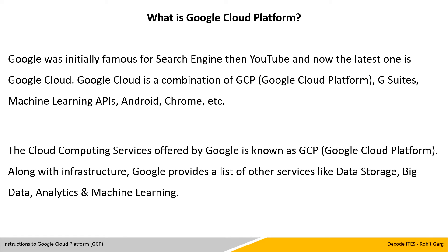What is Google Cloud Platform or GCP? Google was initially famous for its Search Engine, then YouTube, and now the latest one is Google Cloud. Google Cloud is a combination of GCP, Google Cloud Platform, and G Suite, Machine Learning APIs, Chrome, Android and many more. The cloud computing services offered by Google are known as GCP. Along with infrastructure, Google provides a list of other services like data storage, Big Data, Analytics and Machine Learning.